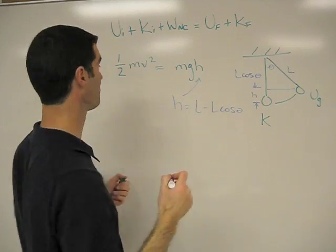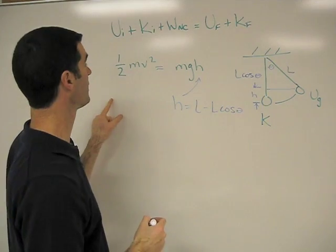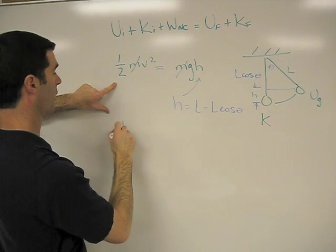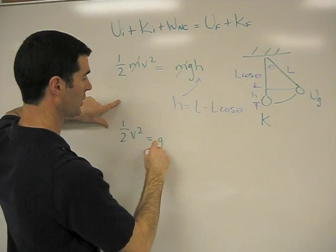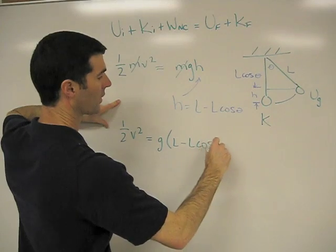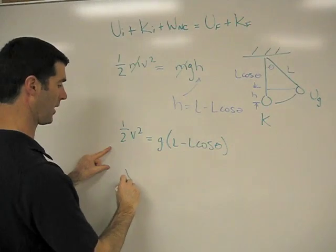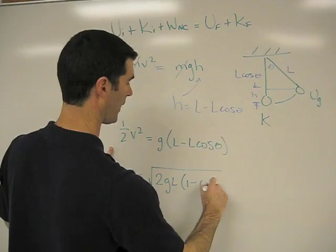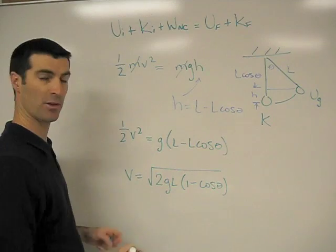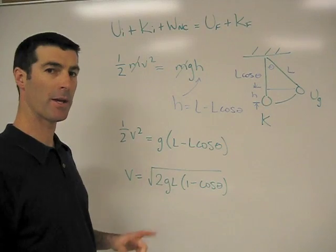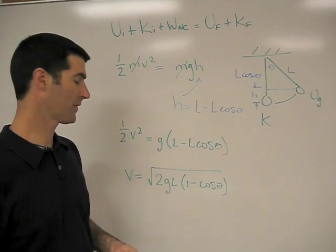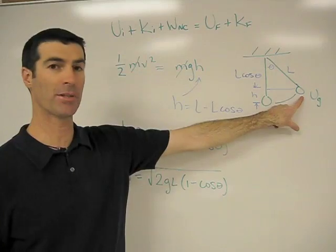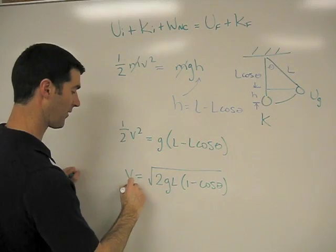We rewrite our energy equation. Notice that mass M is the same on both sides, so it cancels out. We have one-half V² = g·L(1 - cosθ). Bringing the 2 over and taking the square root gives: V = √(2gL(1 - cosθ)). Now we have to remember what this velocity represents — this is the velocity after the ball is embedded in the block and the two travel up together. So this is the velocity of the combined block-and-ball system, V_BB.